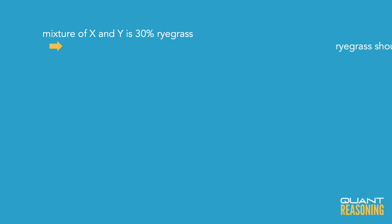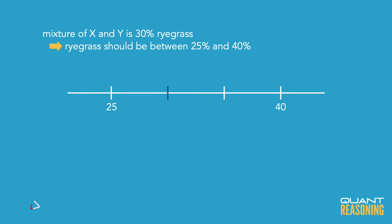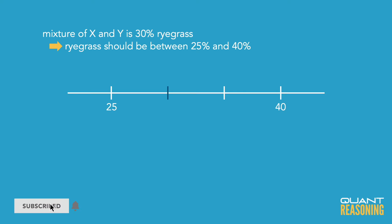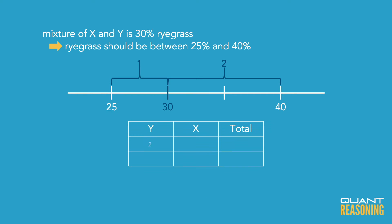Now we can ask, where in that range? Is it closer to 25 or is it closer to 40? Looking at a number line, we can see that there's a ratio of distances of 2 to 1 — it's twice as close to 25 as it is to 40. What that tells me is that there must be twice as much Y as there is X in this mixture.